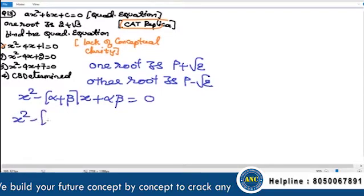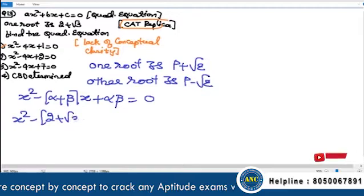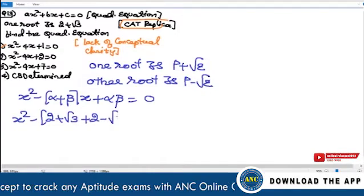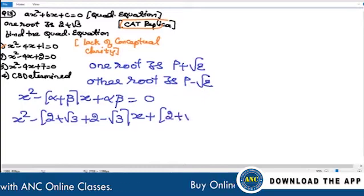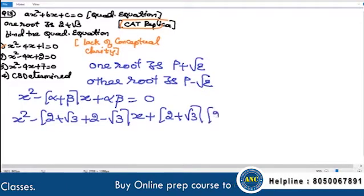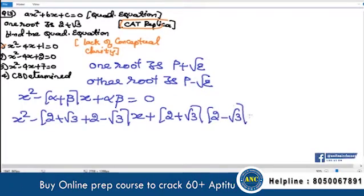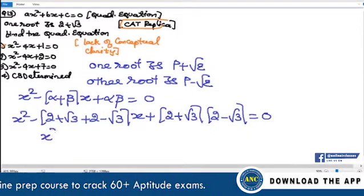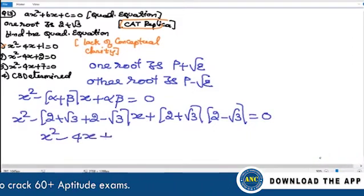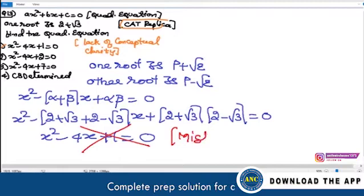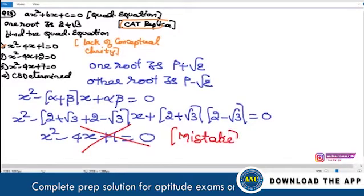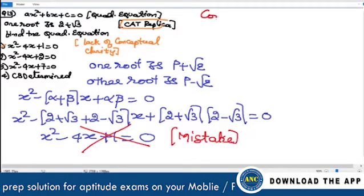So they calculate: x² - (2 + √3 + 2 - √3)x + (2 + √3)(2 - √3) = 0, and tick mark the answer as x² - 4x + 1 = 0. Which is a mistake — they are doing it because they do not know the exact concept.